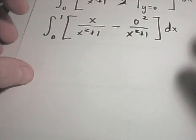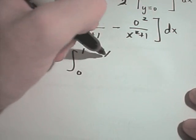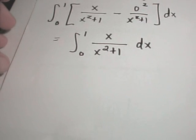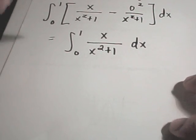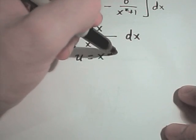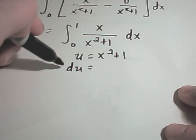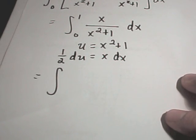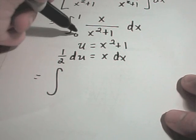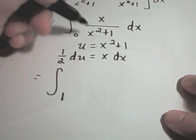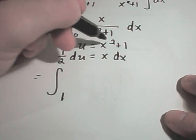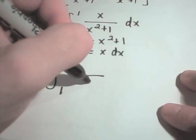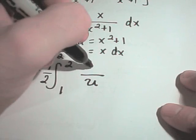I've now turned this problem into a single integral: the integral from 0 to 1 of x over x squared plus 1 dx. At this point you're back to first-semester calculus. We can do a u-substitution: let u equal x squared plus 1, then du equals 2x dx, so we need to divide by 2 to get x dx. When you do a u-substitution your limits of integration change — plugging x equals 0 gives u equals 1, and plugging x equals 1 gives u equals 1 squared plus 1, which is 2.